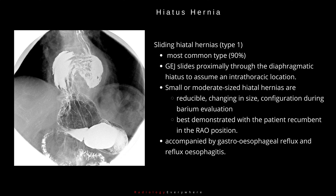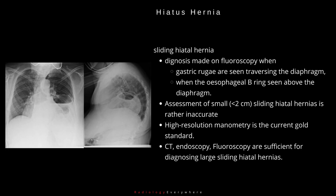Type 1 is often accompanied by gastroesophageal reflux and reflux esophagitis. The diagnosis of a sliding hiatal hernia is made on fluoroscopy when gastric rugae are seen traversing the diaphragm, or when the esophageal B-ring representing the squamocolumnar junction is seen above the diaphragm. Assessment of small sliding hiatal hernias, less than 2 cm, is rather inaccurate and in the past has led to over-diagnosis. High-resolution manometry, although imperfect, is the current gold standard.